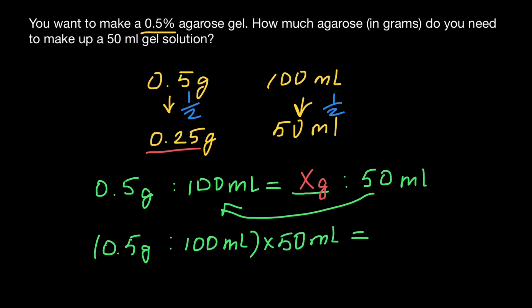And this is going to equal x grams. So on the left side, we're going to get 0.25 grams, which equals x on the right. So here is our solution using the mathematical method.